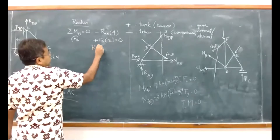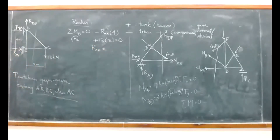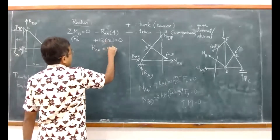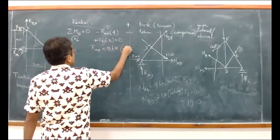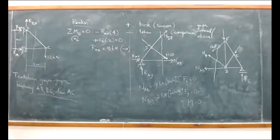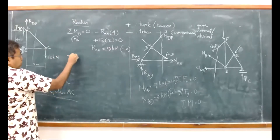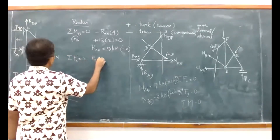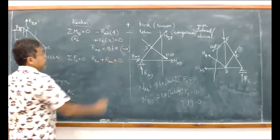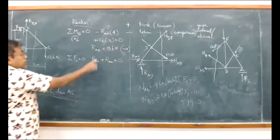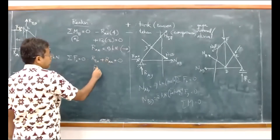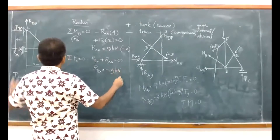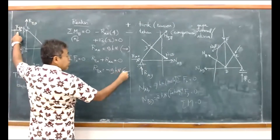Kita dapatkan RAX-nya: 36 bagi 4 = 9 kilonewton, positif berarti ke kanan. Setelah itu pakai sigma FX sama dengan 0: ada RBX tambah RAX sama dengan 0. Karena RAX sudah dapat 9, berarti RBX minus 9 kilonewton — minus artinya ke kiri karena saya buat arah panahnya ke kanan.